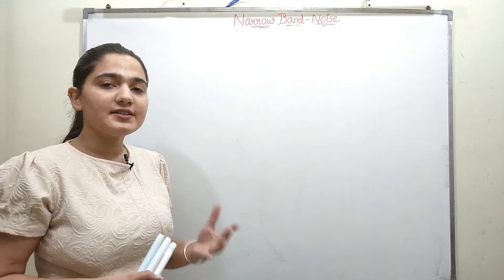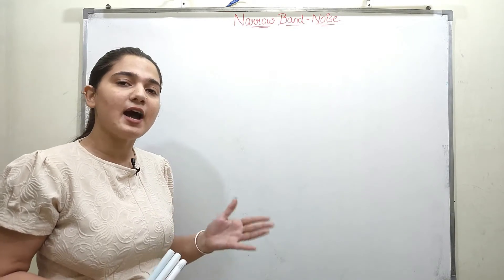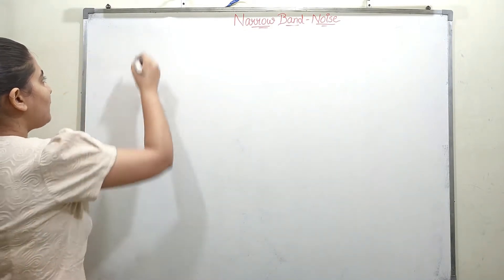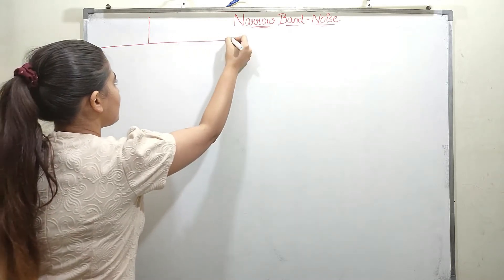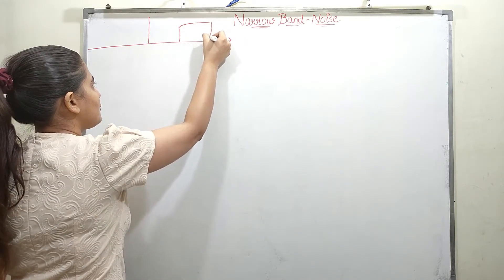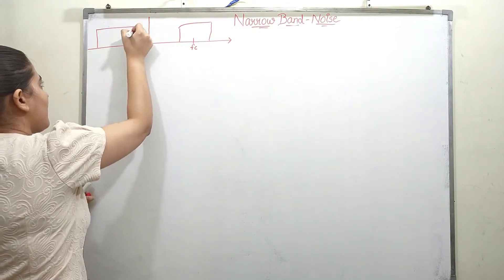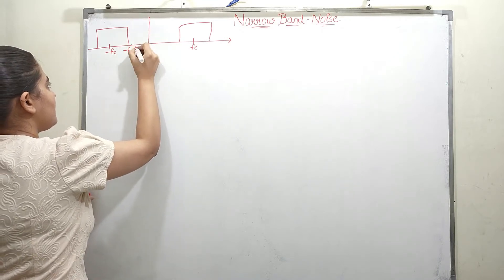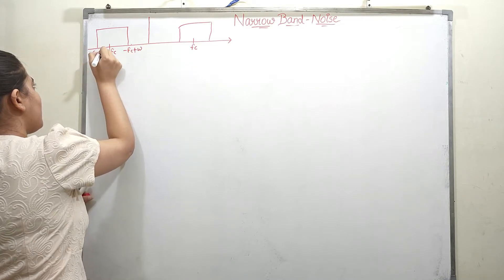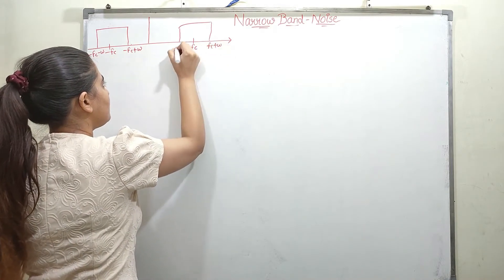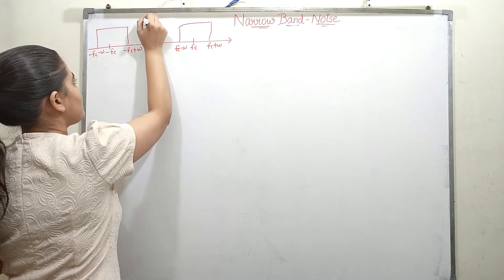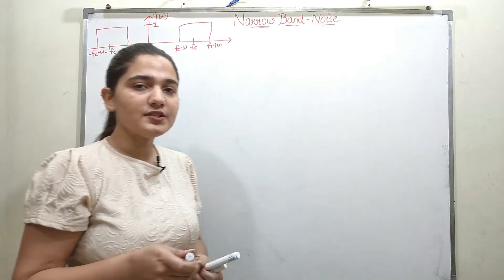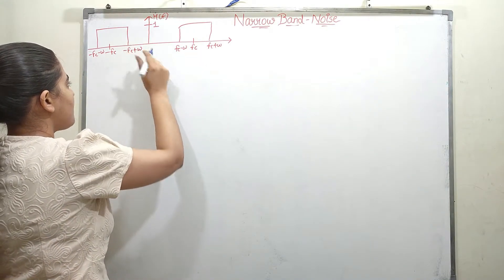I have already told you that in the receiver, a filter is present which is filtering out the frequency components centered around Fc and minus Fc. This is the band pass filter present in the receiver, centered around Fc and minus Fc. The frequency components are: minus Fc minus W, minus Fc plus W, Fc minus W, Fc plus W, with amplitude 1. This is H(F), the transfer function of the band pass filter.